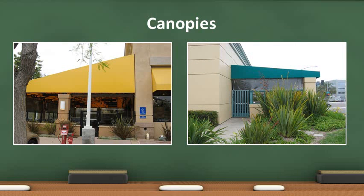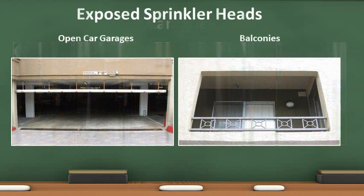Sprinklers shall be installed under exterior roofs or canopies exceeding 4 feet. When the canopy or roof is of non-combustible construction, sprinklers can be omitted. When combustibles are stored and handled under roofs and canopies, sprinklers shall be installed. When installed in open car garages, within 20 feet of building openings, balconies, and patios, sprinkler heads shall be listed for corrosion resistance, such as Teflon or wax coated or stainless steel.